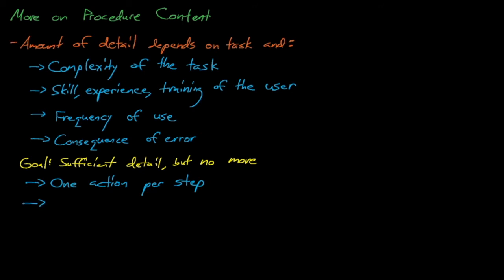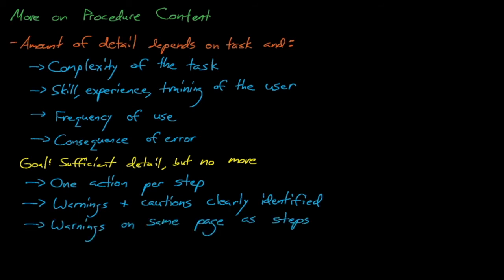Procedures should also have warnings and consequences clearly identified and separated from the other steps in the procedure. This makes sense, since we should want to highlight any text that notifies operators of a potentially dangerous action. We should also place warnings on the same page as their related action, even if it means bumping steps to the later pages. If an operator is unlikely to see a warning until after they've already completed the step, then the warning is essentially useless.